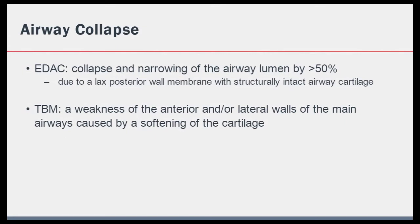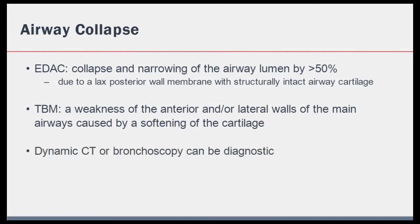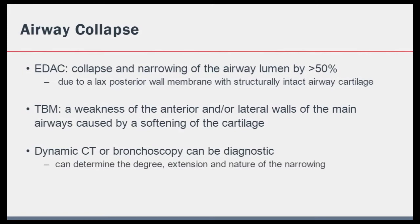Both of these entities were traditionally diagnosed by bronchoscopy. However, dynamic CT thorax can be diagnostic and can determine the degree, extension and nature of their narrowing. Interventions for excessive dynamic airway collapse can include non-invasive ventilation, and for excessive dynamic airway collapse and tracheobronchomalacia, stents have been used depending on the underlying etiology.